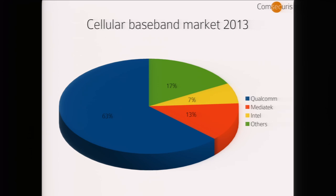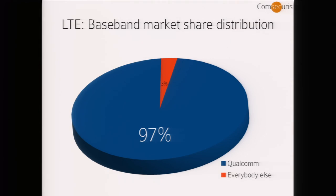Most of you will have a smartphone, and many are LTE-capable these days. If you look at the market share distribution for LTE chipsets in Q1 2013, Qualcomm totally dominates — 97% of all chips going into LTE-capable mobile phones were Qualcomm's.